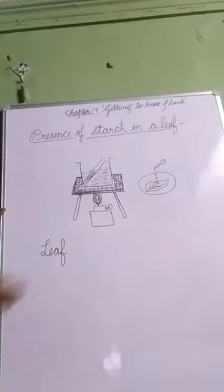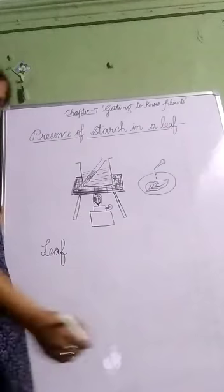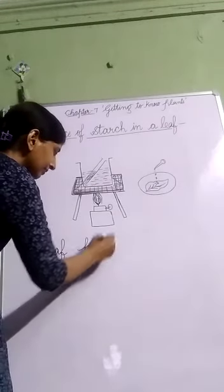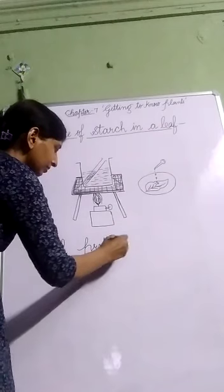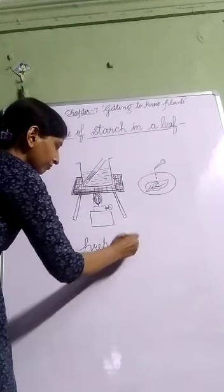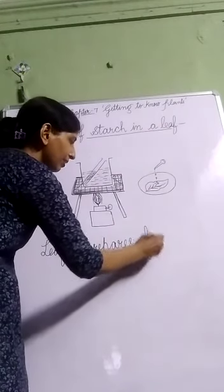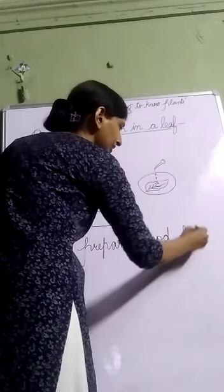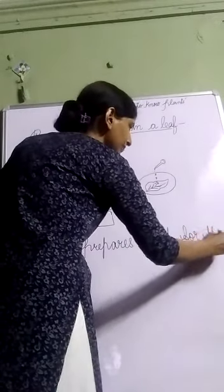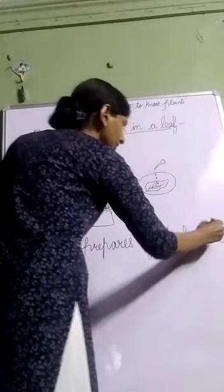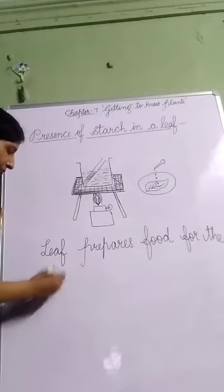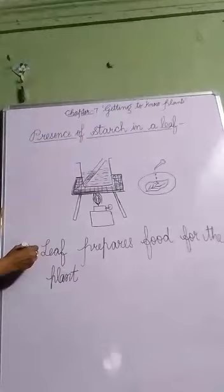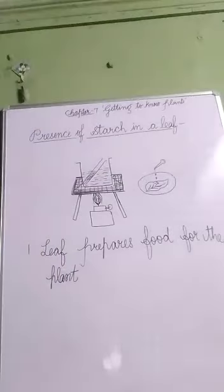Leaves are called the food factory of the plant. The leaf prepares food for the plant. This is one of the most important functions of the leaf.